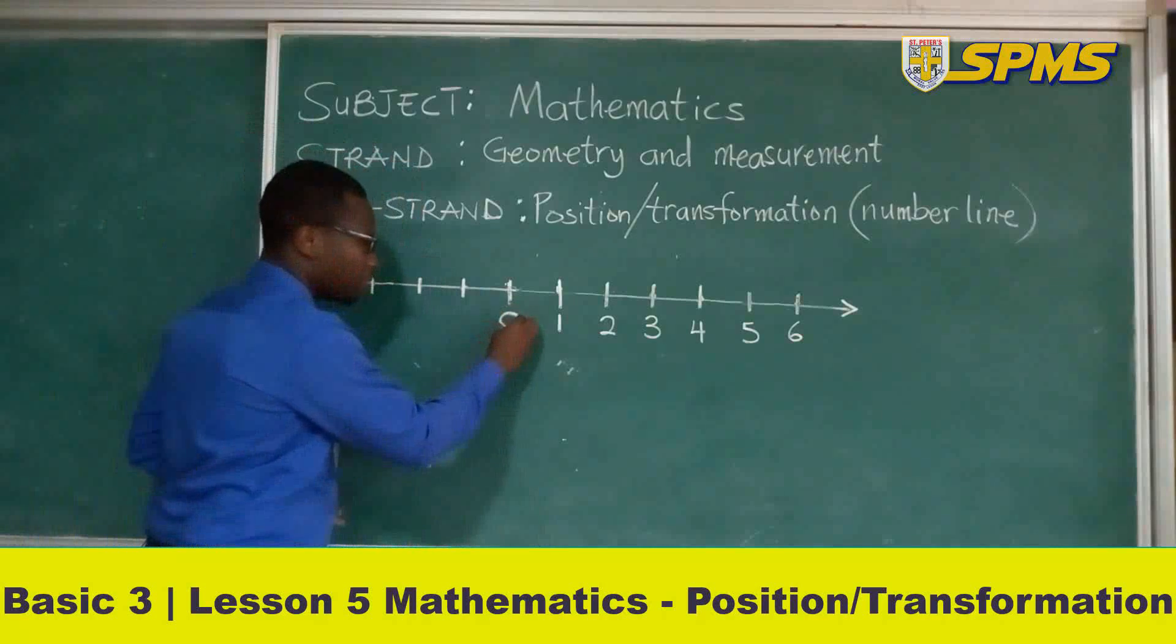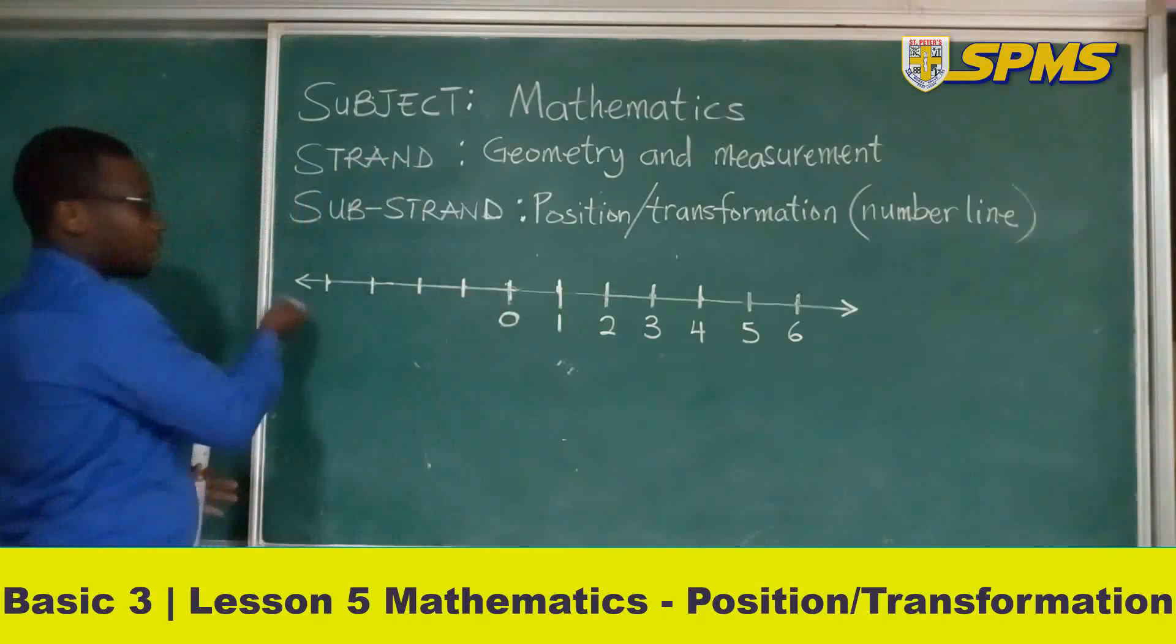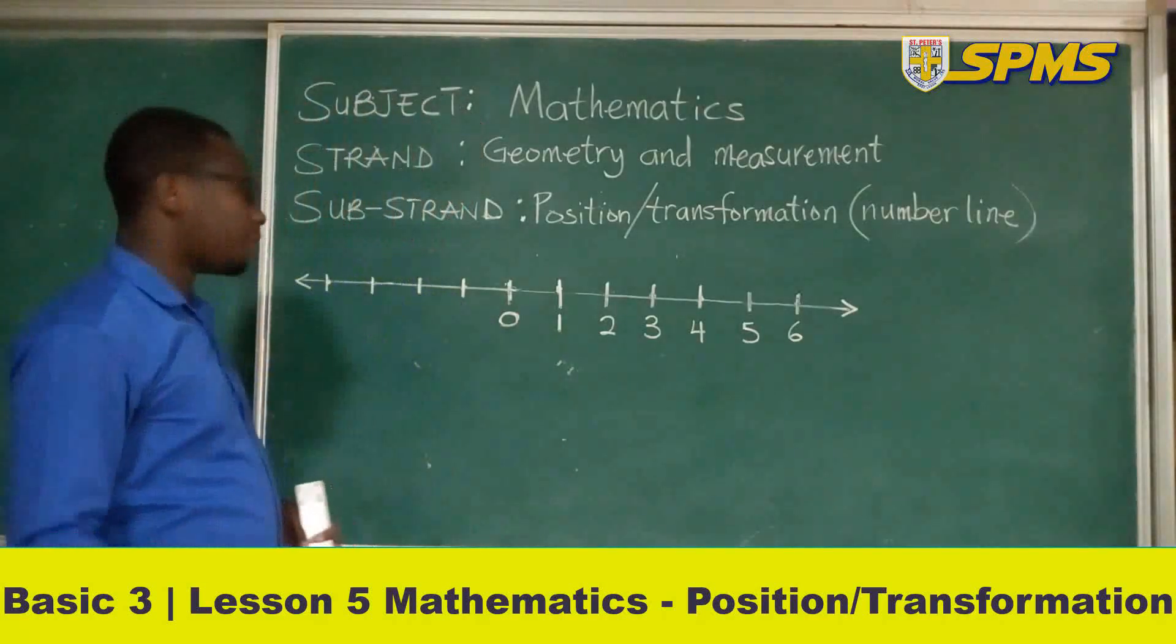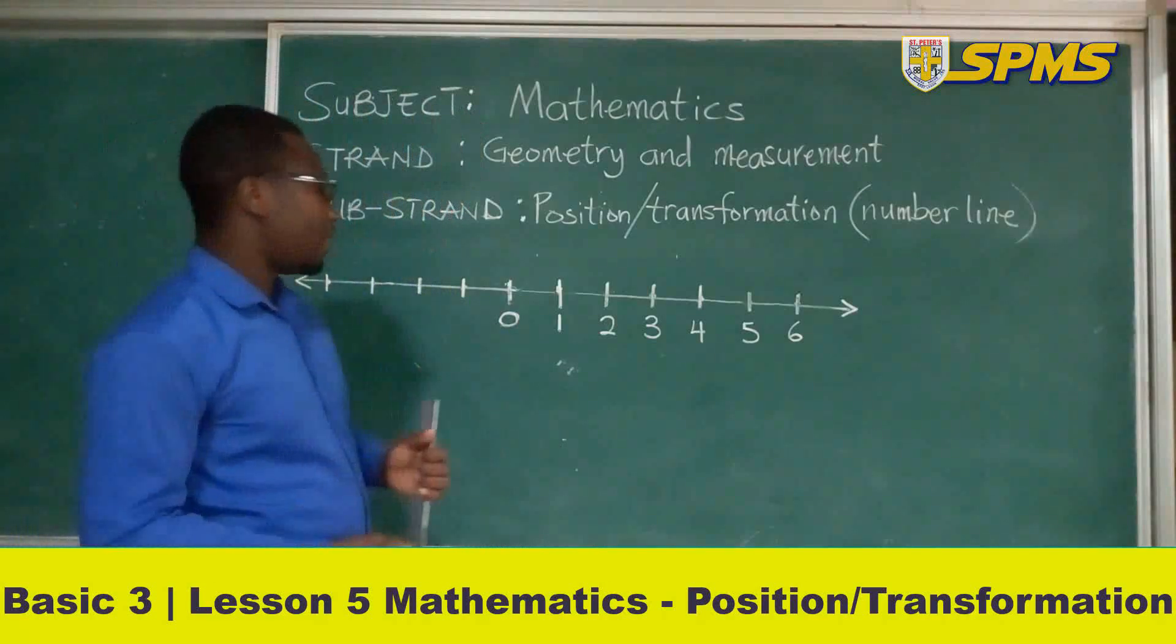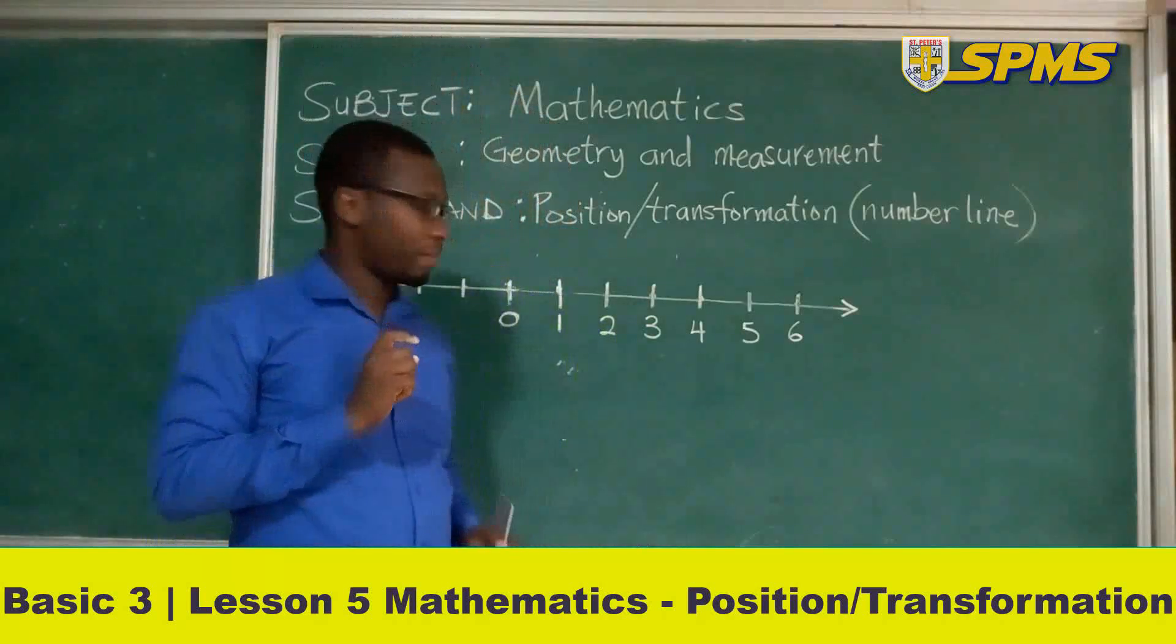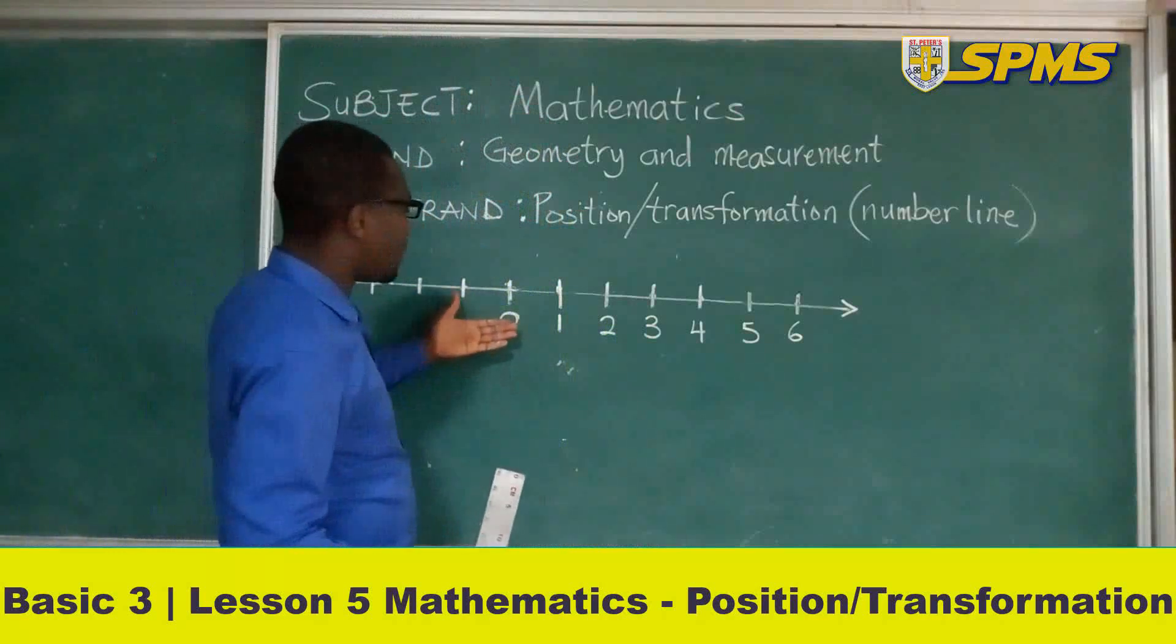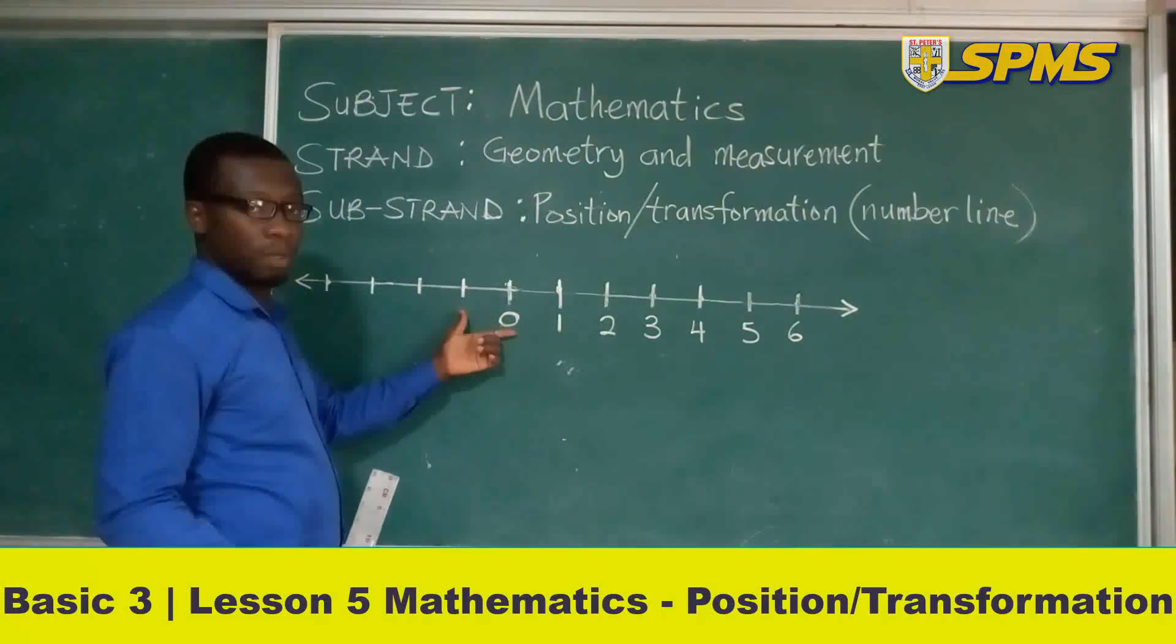Now we are going to represent numbers on this side of the number line. And don't forget that we said earlier in class three, first term, that the numbers that come before the zero are represented with negatives.